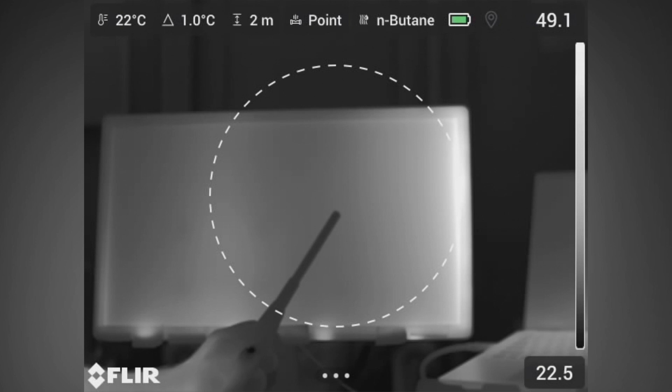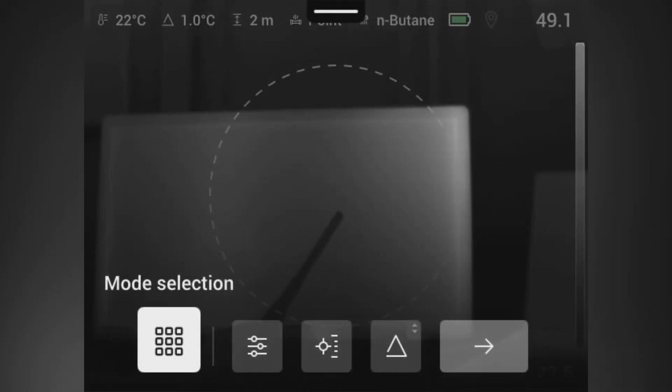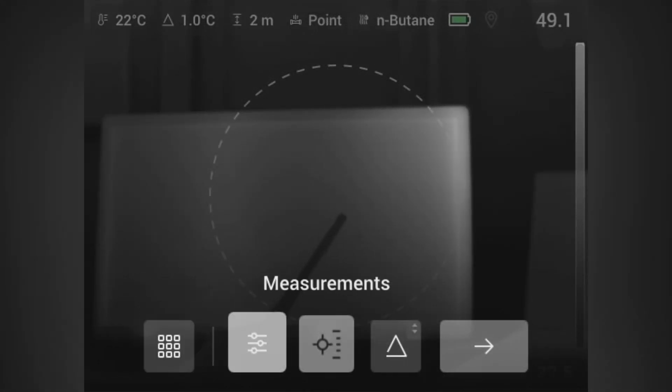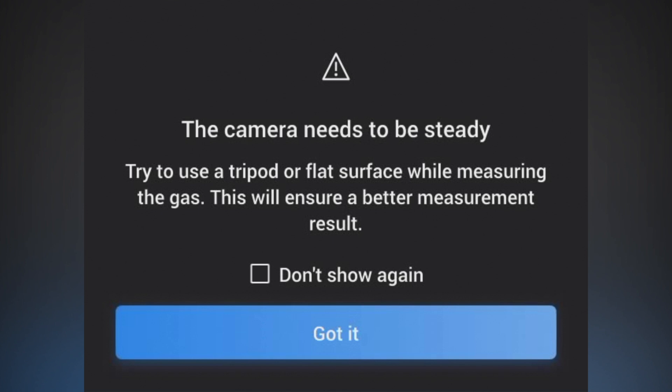Now to make that happen, we'll go into quantification and hit start measurements. Similar to the standard mode, you'll be warned to put the camera on a tripod. When you hit got it, you'll see the countdown from five, four, three, two, one.